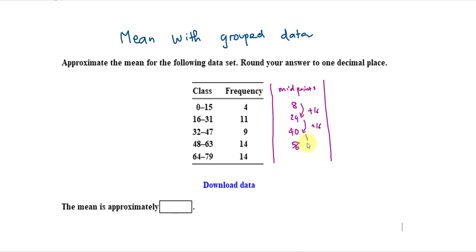And then again, 16 units. And to get the last one, we simply add 16 to 56. That's going to be 72 for the last midpoint.